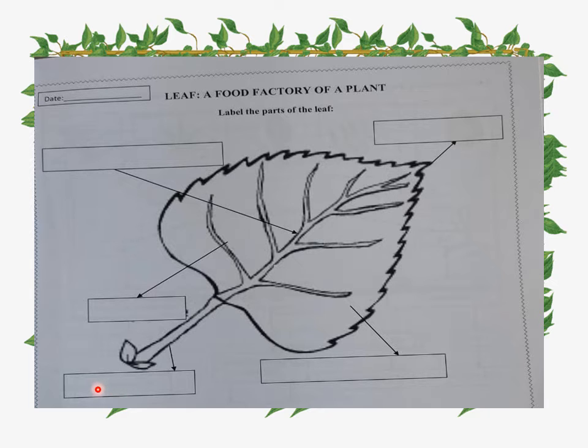Now in this box we will write leaf blade or leaf lamina. In the last box we will write the stalk, S-T-A-L-K, stalk. My dear, you can take the help of the book for spelling or for the correct spelling. We discussed this also during our chapter discussion.